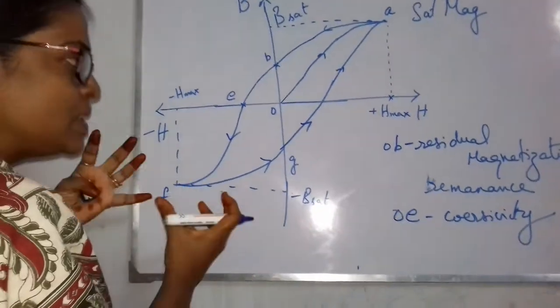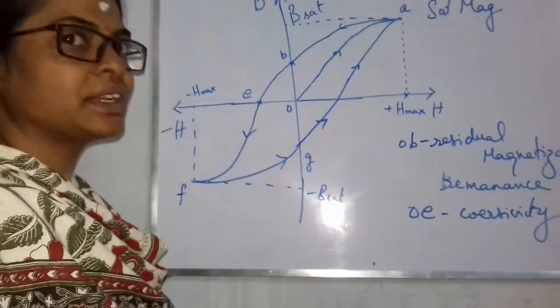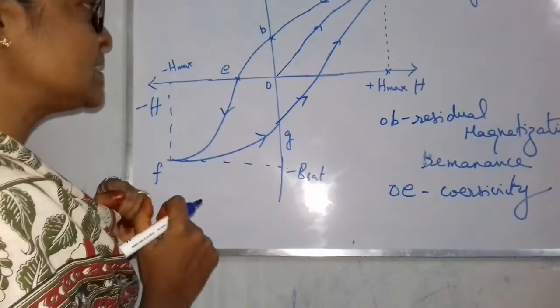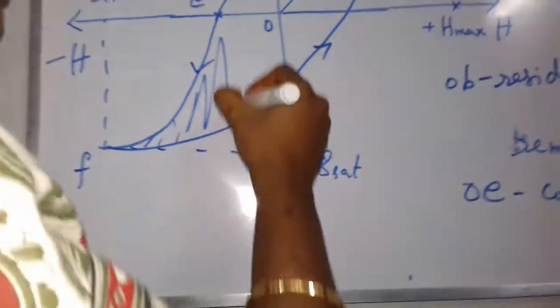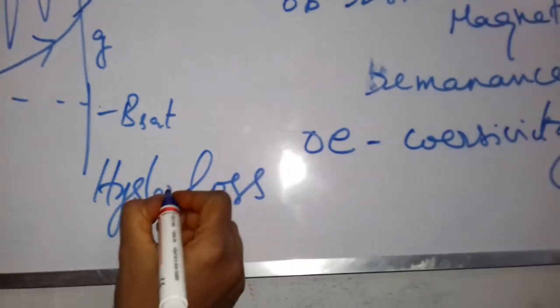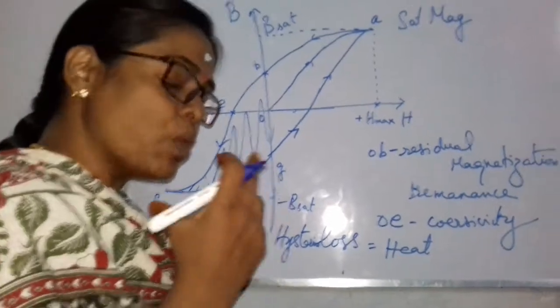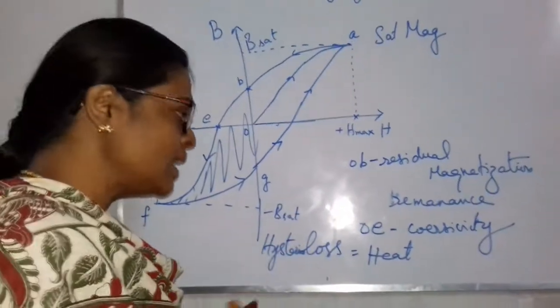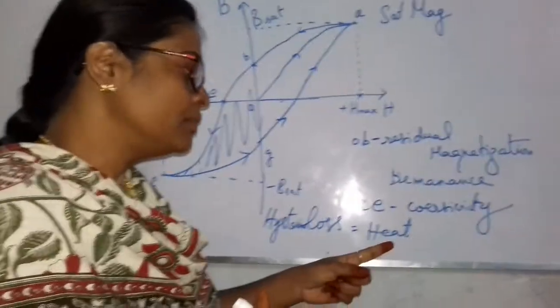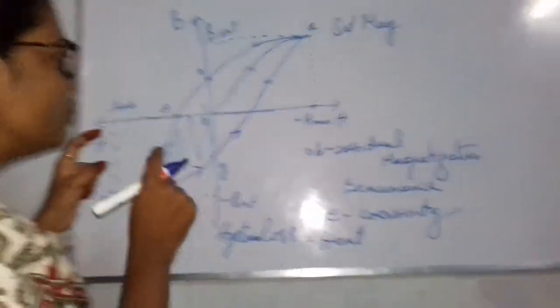When the loop goes to minus H maximum and then back through magnetization in the positive direction, we get a complete closed loop. The area of this loop indicates the loss, which we call hysteresis loss. This is nothing but the heat dissipated during the magnetization and demagnetization cycle. We make the dipoles turn and do work during this cycle, and the heat generated is lost — this is hysteresis loss.